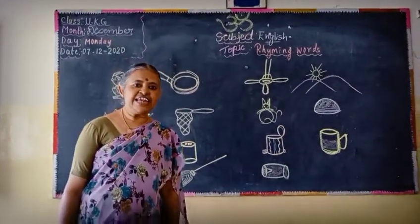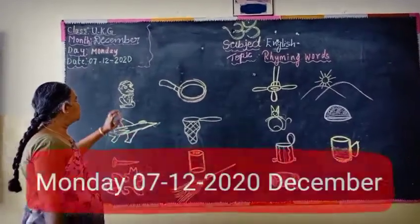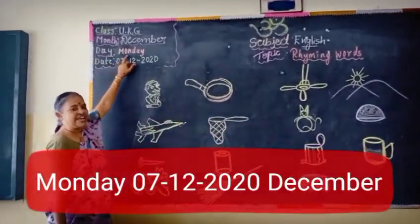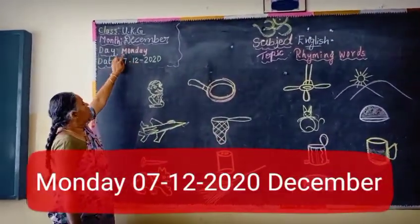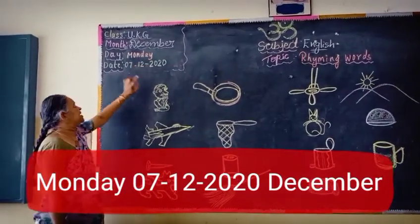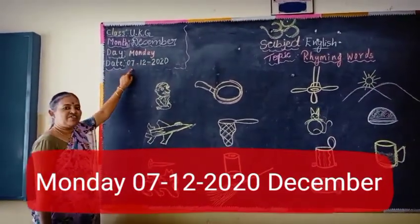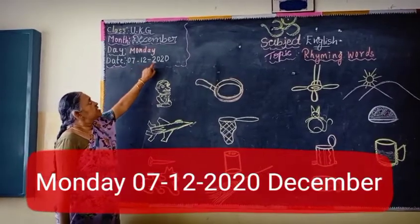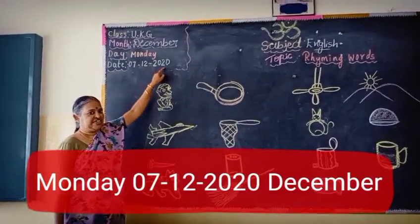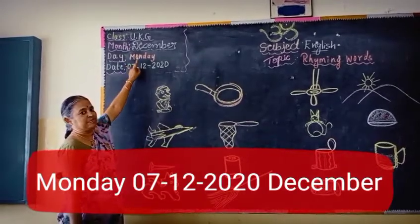Now the date. Today is Monday, M-O-N-D-A-Y, Monday. Today's date is 7-12-2020. Which is the month? It's December.